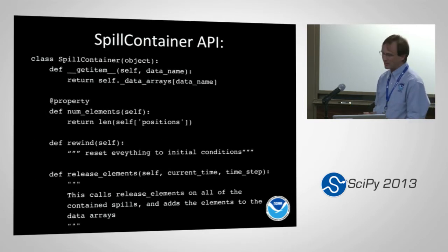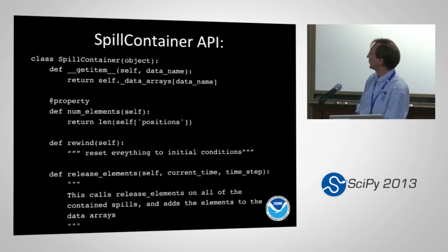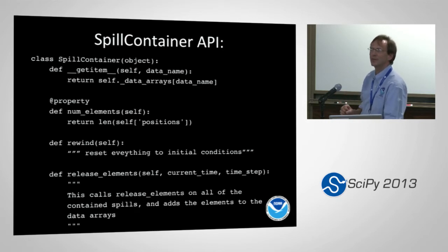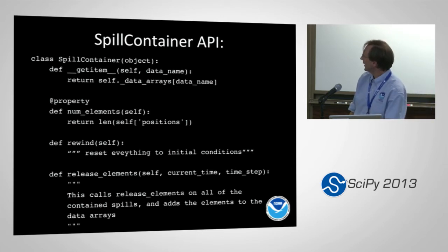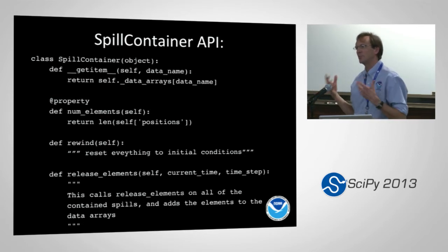The basic API of the spill container: we have __getitem__ overloaded so you can index by the name of your data array and get it back. You can figure out how many elements it has. Almost everything in the model has a rewind method that resets itself to its initial state. And then there's the release_elements method, which calls the associated spills that can then create new particles as needed.